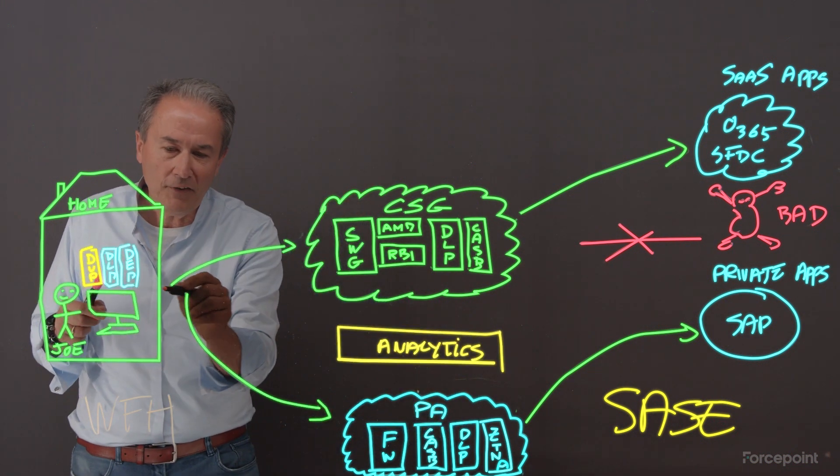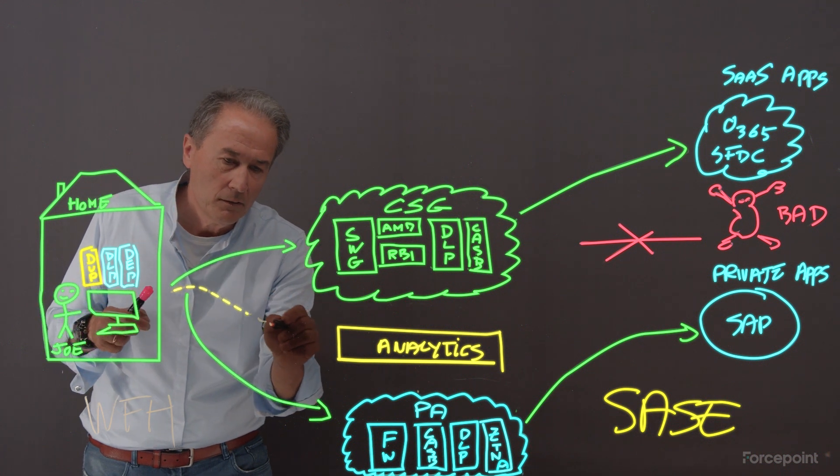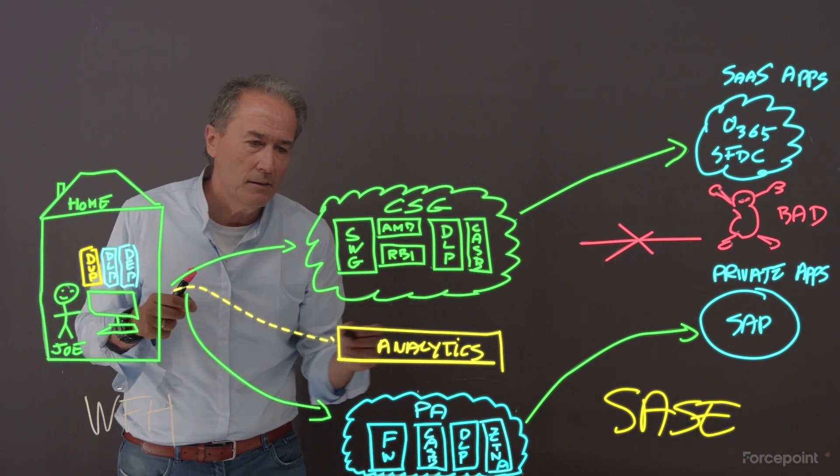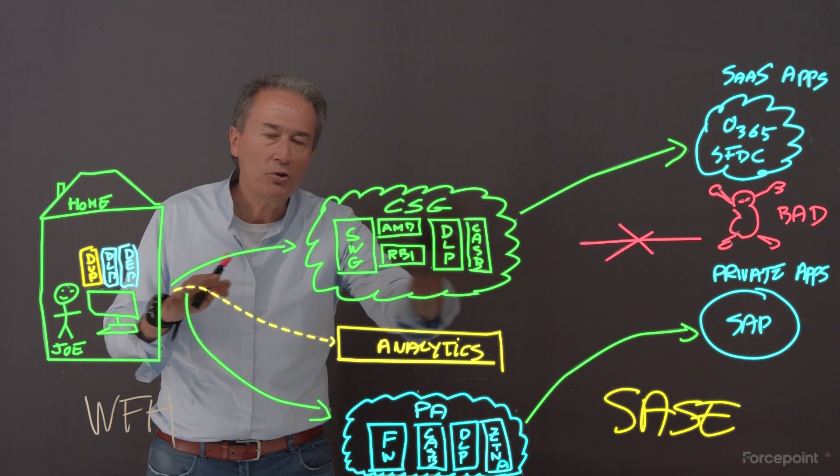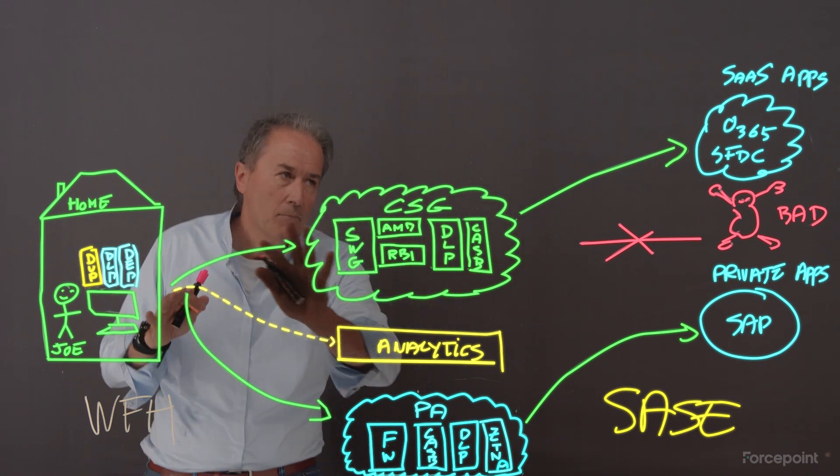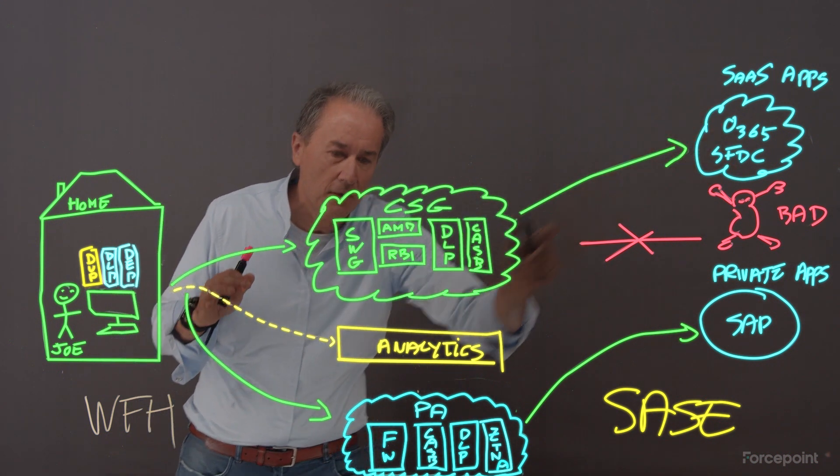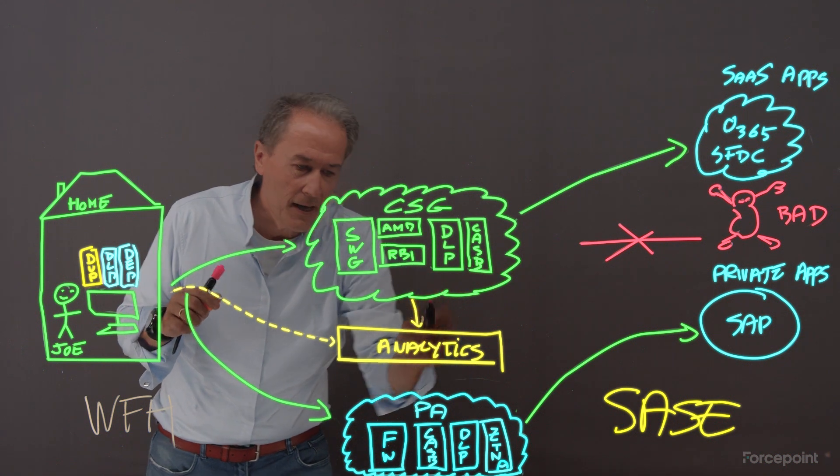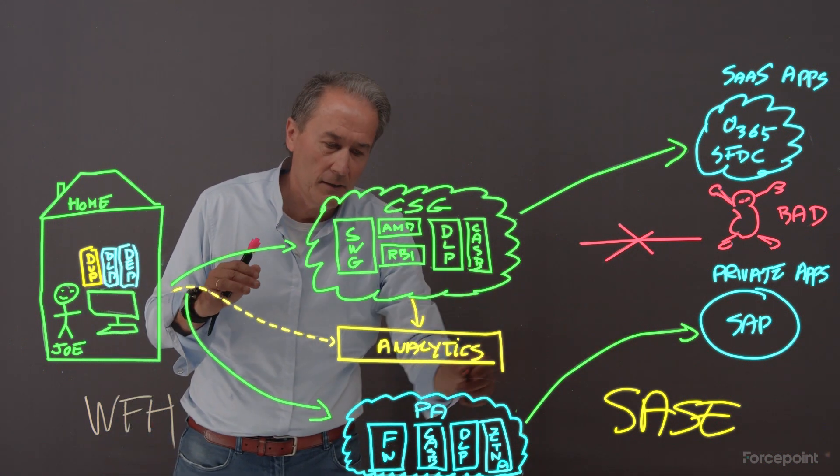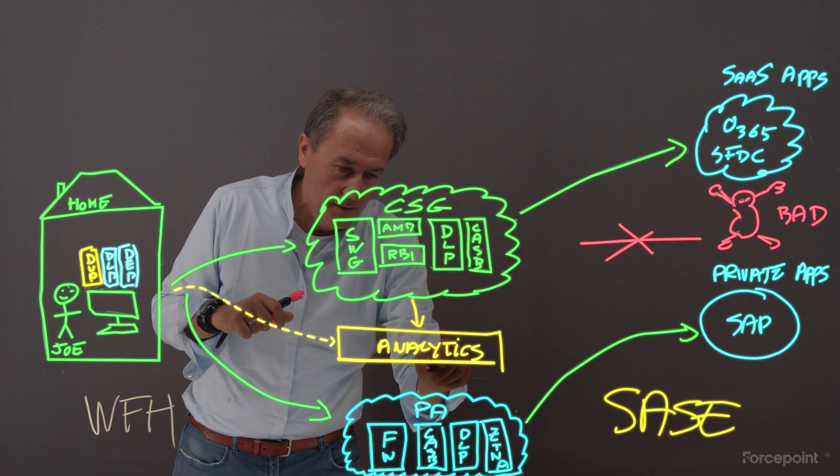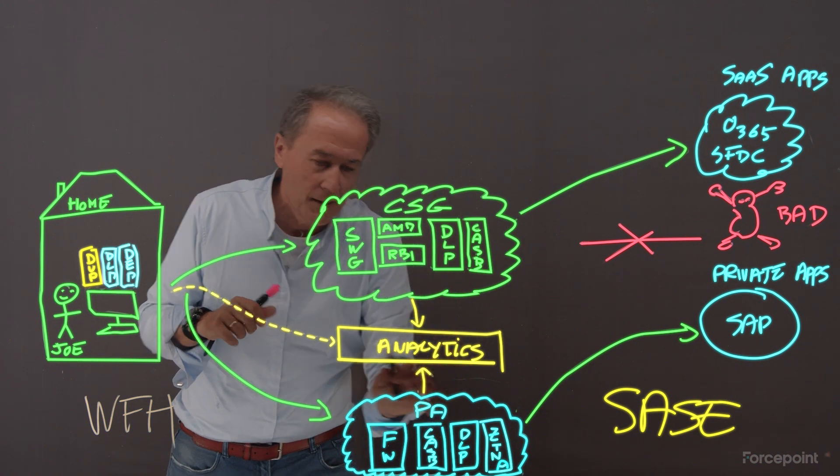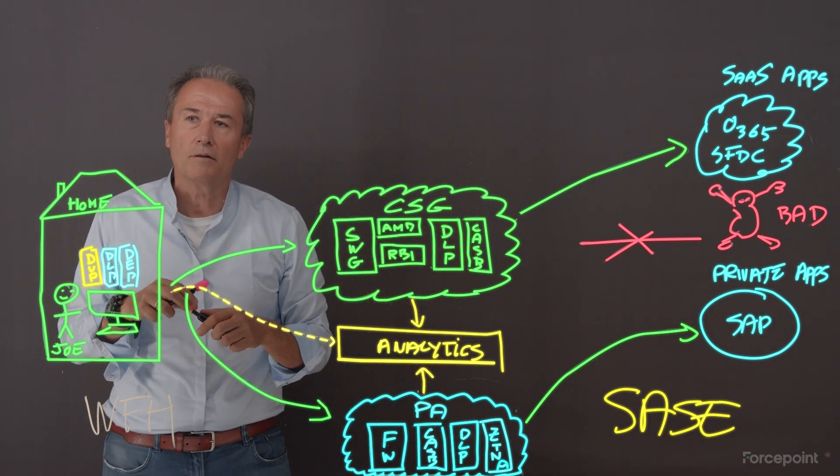And these analytics will be fed both by our agent blade, as well as all the traffic that now we're seeing, the public internet traffic, the SaaS traffic, as well as the private traffic, the VPN replacement traffic. Now I've got a full picture of the user.